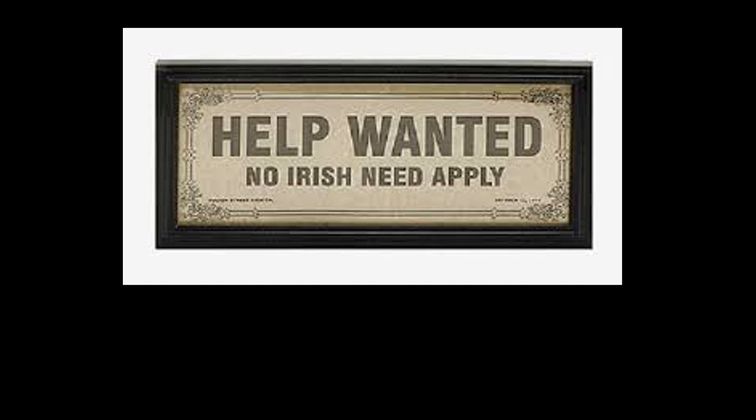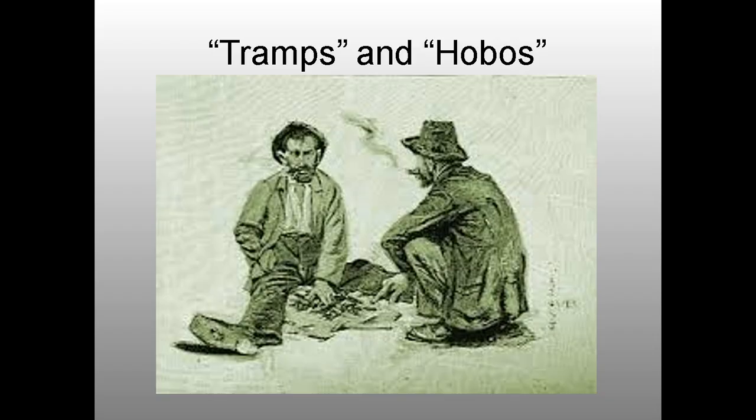Poor people coped in various ways — they believed their poverty was temporary. They survived through small savings, rigid thrift, and being frugal — which became part of the American character because you had to. You relied on family members, odd jobs, maybe debt. Aid came from churches, fraternal associations, and trade unions. More and more in the late 1800s you see tramps and hobos — men traveling from city to city looking for any type of work, eventually riding the railroads illegally.